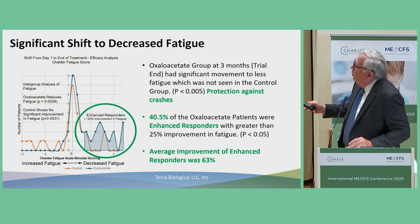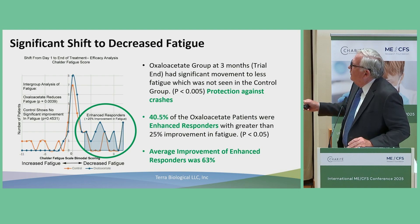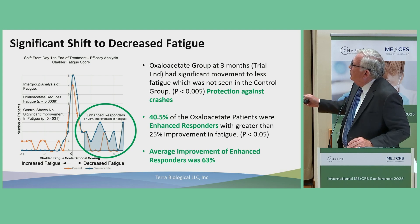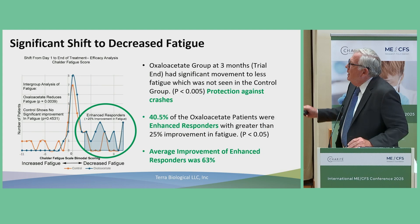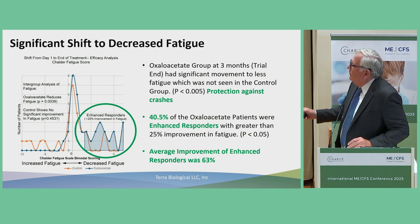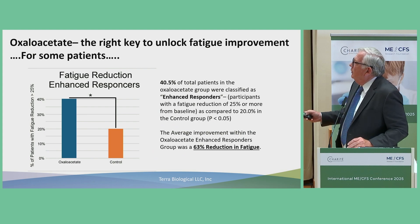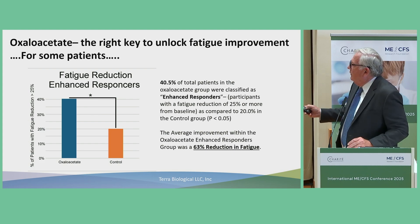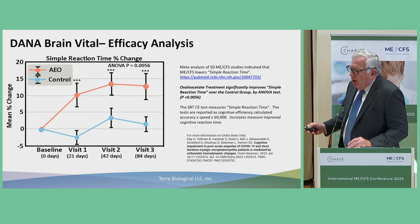If we superimpose the oxaloacetate graph over that, we see immediately that a large portion of patients — this is the 25% improvement line — are doing better than 25% improvement. It turns out that's 40% of the patients who tried this, and their average response was a 63% reduction in fatigue. We also see on this side of the graph there's no crashing after three months in the oxaloacetate group compared to the control group. The number of patients in the enhanced responder group is twice as many as the control group, and it's statistically significant.